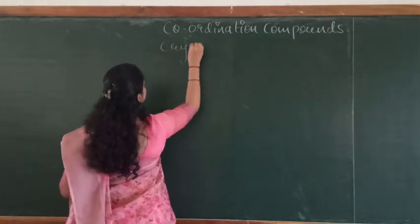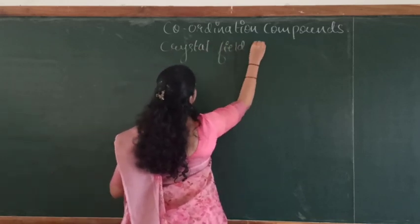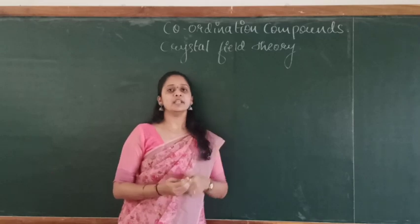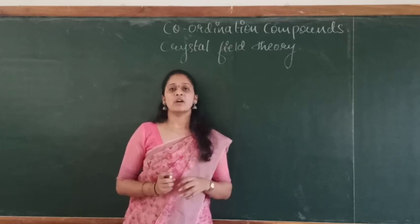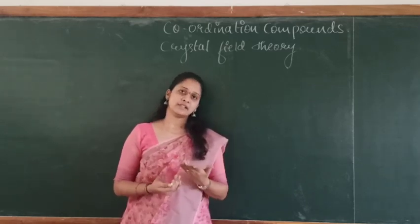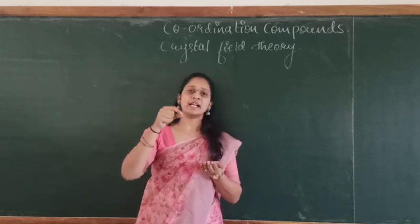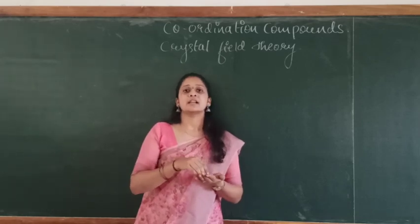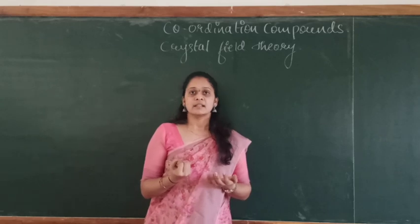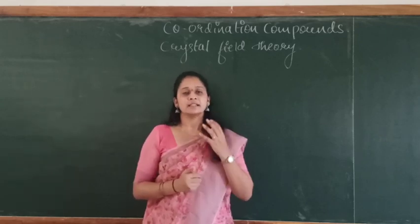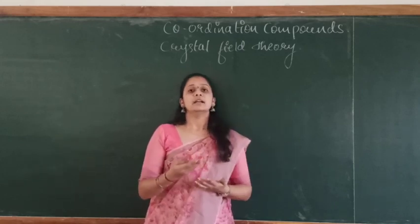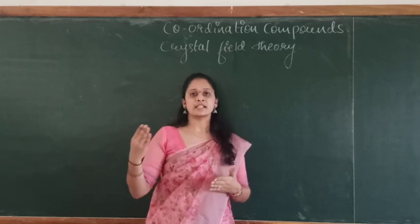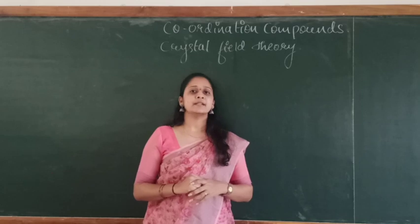In the crystal field theory, let us understand how it explains the coloration of compounds. As we know, how color can be observed in a compound — when visible light falls on a particular compound, some of the radiations whose wavelength matches the compound are absorbed, and the complementary colors are emitted. Hence the coordination compounds are colored compounds, most of them being D-block elements, which show d-d transitions with the d orbitals.